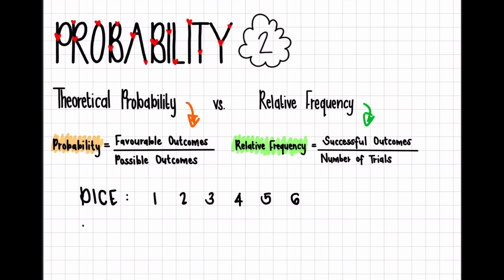So if I say to you, what is the probability that when I roll this dice it will land on a six? You're going to look at your favorable outcomes of it being a six, which is one — there's only one six on the dice — out of the number of possible outcomes, which is six. So I have a one out of six chance of the dice landing on a six if I were to throw it.